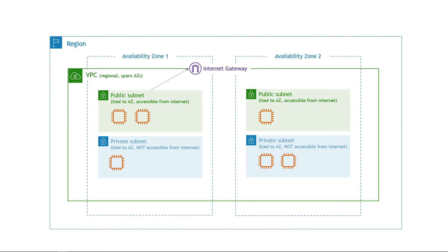The internet gateway is at the VPC level, and a public subnet has a route to it — that's what makes it public. The private subnet doesn't have that route, so you can't reach it from the internet and it can't reach out. But if you do need outbound internet access from a private subnet — for updates, patching, or downloading files — you use a NAT gateway. NAT stands for Network Address Translation. You create the NAT gateway in the public subnet, add a route from your private instance to it, and then a route from the NAT gateway to the internet gateway.